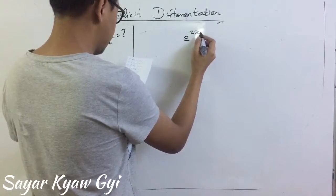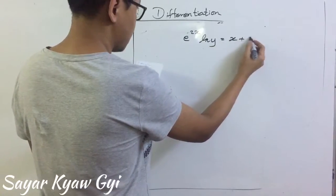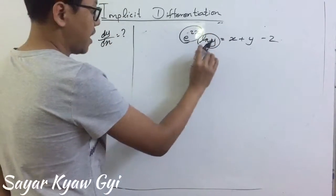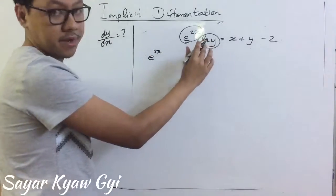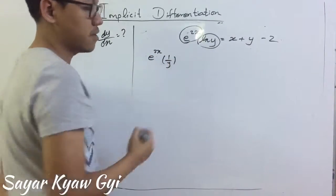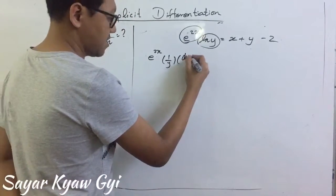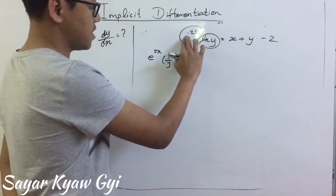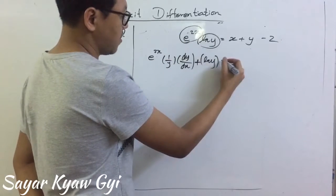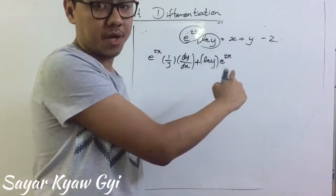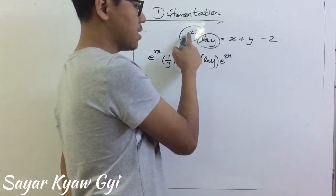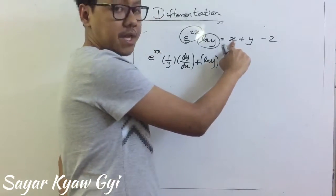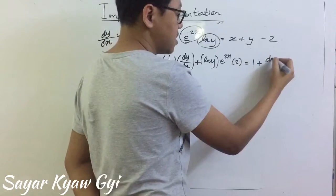The next example is e to the power 2x times ln y equal to x plus y minus 2. Here is the product rule. I'm going to differentiate ln y first — it will be 1 over y, and then dy by dx. Remember, whenever you do y, there is dy by dx. Plus, now I will differentiate e to the 2x using the chain rule again. When you differentiate an exponential function, you get exactly the same, and then you have to differentiate 2x, so you get 2. Equal to — when you differentiate x, you get 1, and when you differentiate y, you get dy by dx.